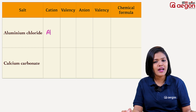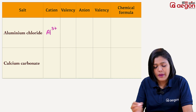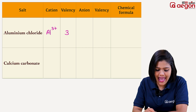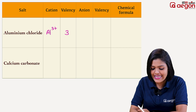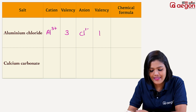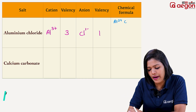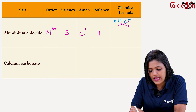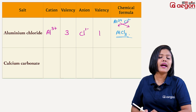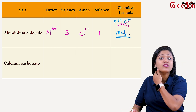Now let's look at Aluminium. Aluminium's atomic number is 13, so its electronic configuration is 2, 8, 3. It donates 3 electrons, making it Al3+. Chloride is Cl1-. So we cross multiply: Al gets subscript 1 from the chloride's valency, Cl gets subscript 3 from aluminium's valency. The formula for aluminium chloride is AlCl3.